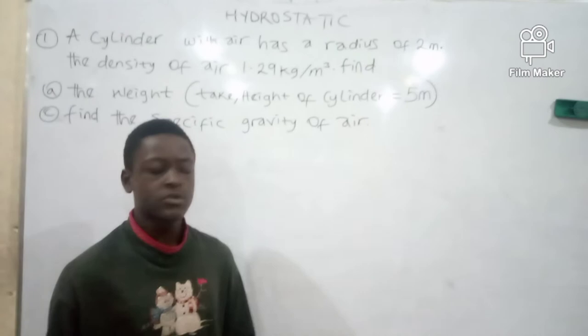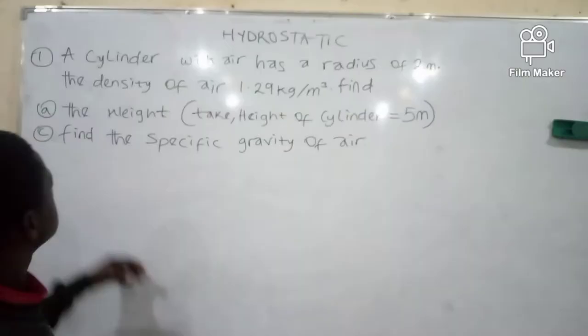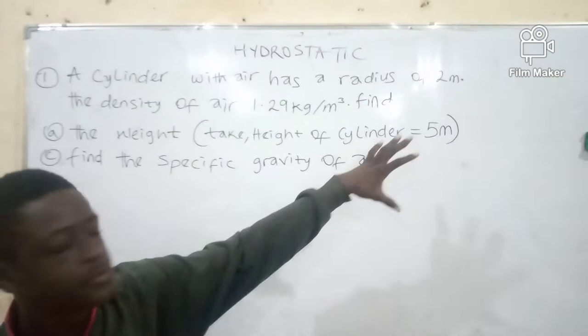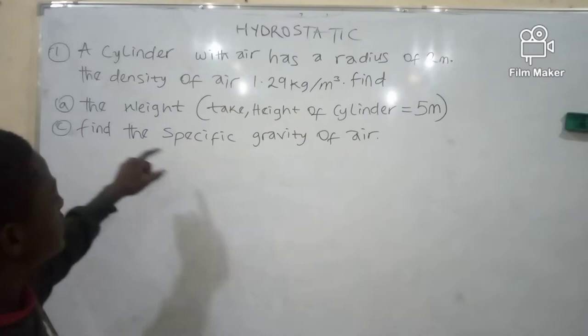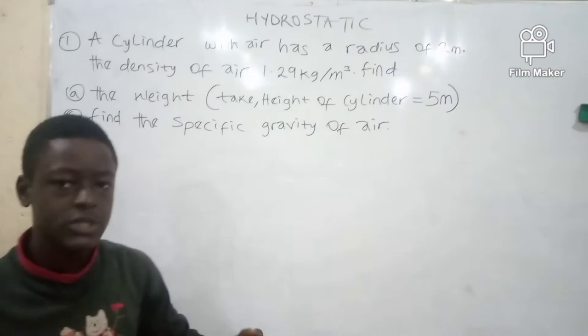Welcome to today's tutorial. Our topic for today is hydrostatics. Now we have a question on the board. The question says the cylinder with air has a radius of 2 meters. The density of air is 1.29 kg per meter cubed. We have to find the weight given the height of the cylinder is 5 meters, and we have to find the specific gravity of the air.